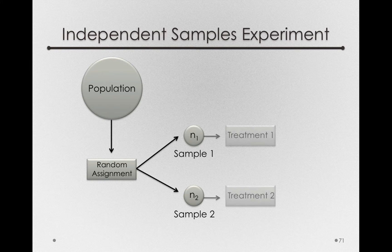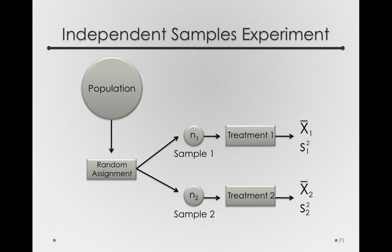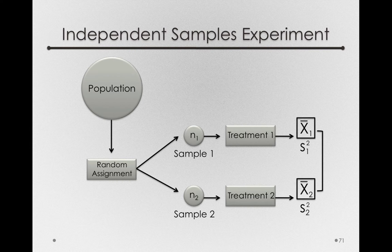After we've done this random assignment, each group will get a treatment. So sample 1 will get the placebo for two weeks, and sample 2 will get the actual drug for two weeks. At the end of this, we'll end up with sample statistics for each sample: a sample mean and estimated variance from group 1, and a sample mean and estimated variance from group 2. Our direct comparison is between the mean for treatment 1 individuals and the mean from treatment 2 individuals — that will capture the effect of the drug versus the placebo.